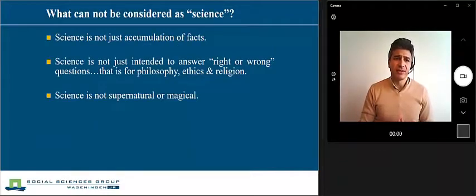What cannot be considered science? Science is not just accumulation of facts. If we just gather facts and information but are not able to apply that in reality, then we do not consider that as science. Science is not just intended to answer right and wrong questions—those are for philosophy, ethics, and religion. And science is not supernatural or magical.